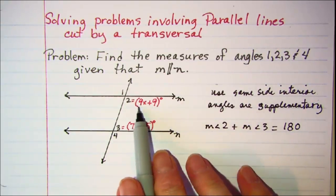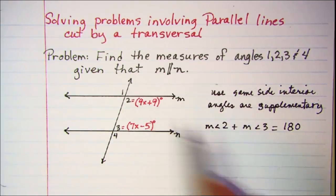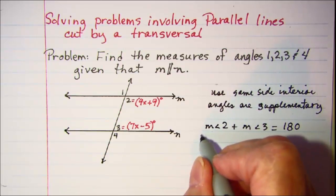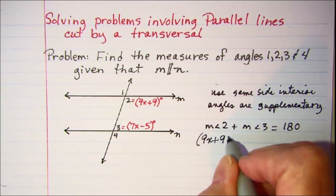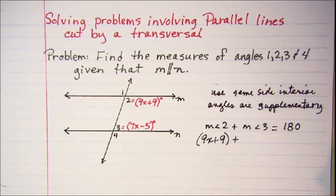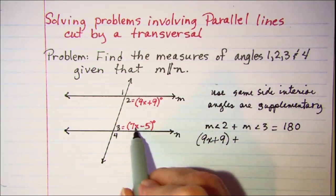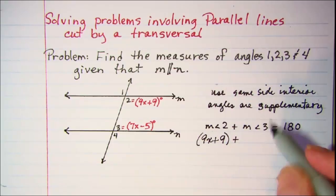We're given that angle 2 is 9x plus 9 degrees. So let's put that in there, and then angle 3 is given as 7x minus 5 degrees.